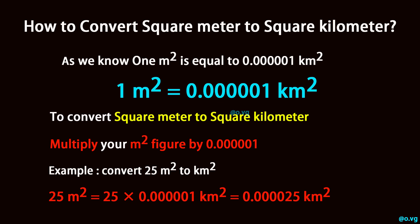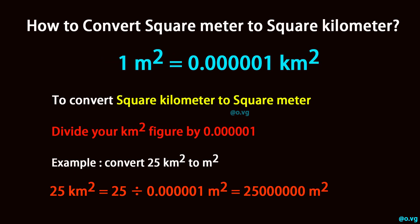Convert 25 square meter to square kilometer. 25 square meter is equal to 25 times 0.0000001 square kilometer, which equals 0.00000025 square kilometer. To convert square kilometer to square meter, divide your square kilometer figure by 0.0000001.